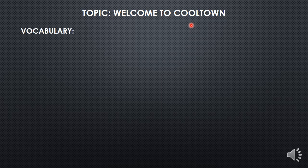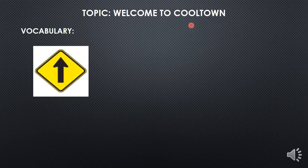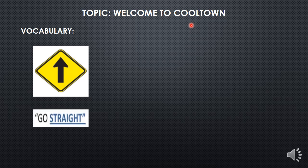Solamente vamos a usar el vocabulary. Vocabulario. Tenemos una señal de tránsito — esta es una señal de tránsito. ¿Qué significa? Que tenemos que ir recto. Go straight.